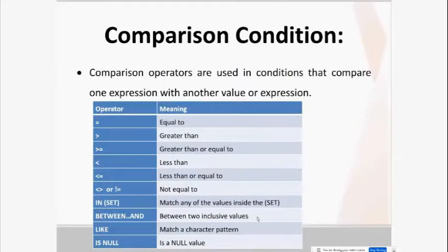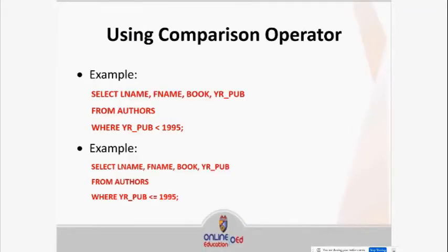BETWEEN is about range. When you say BETWEEN 10 AND 15, that means 10, 11, 12, 13, 14, and 15 — a complete inclusive range. The syntax is: SELECT column names FROM table name WHERE column name BETWEEN lower_value AND upper_value, followed by any comparison operator as needed.